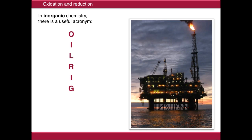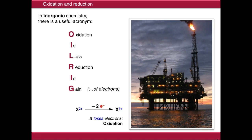In thinking about oxidation and reduction in chemistry, there's a useful acronym: OILRIG. Oxidation is loss, reduction is gain, and that's referring to electrons. So if we have a hypothetical species X2+, and it loses electrons, that is oxidation. If X2+ gains electrons, that's reduction.